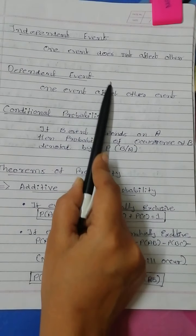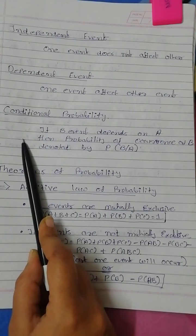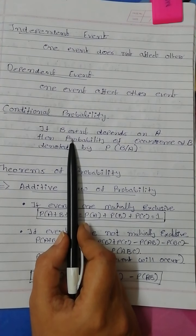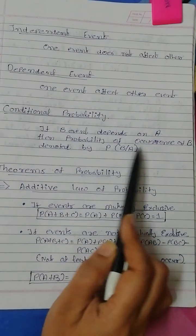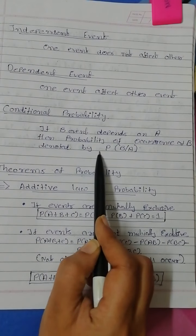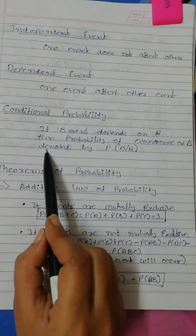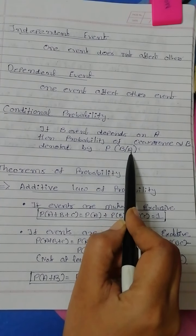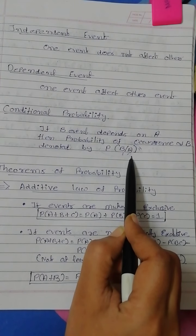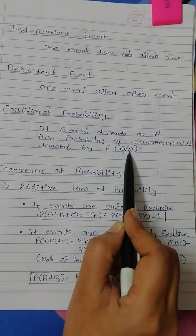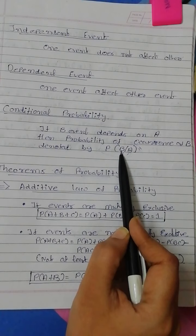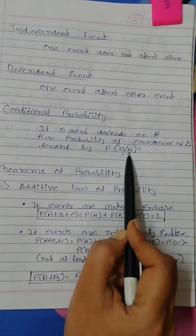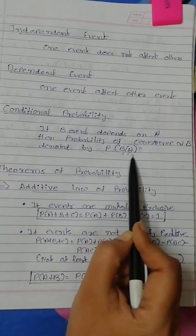From dependent events comes conditional probability. You need to find out which event depends on which — say B depends on A or A depends on B. The conditional probability of B given A is denoted by B|A, meaning the occurrence of B depends on A. If A occurs, then B will occur; if A does not occur, B cannot occur. The occurrence of B is completely dependent on A.